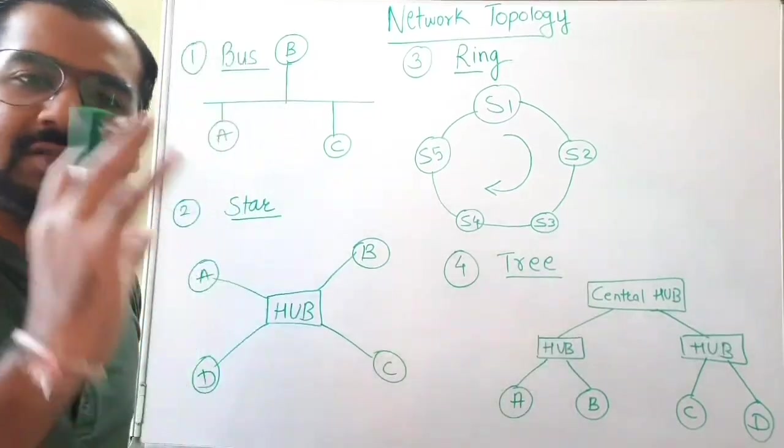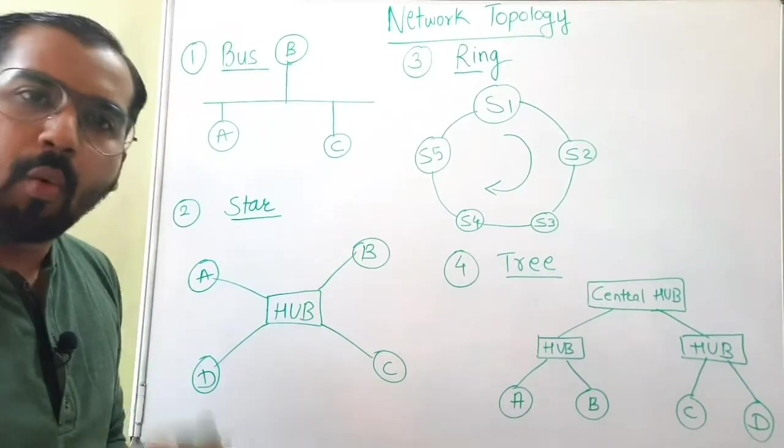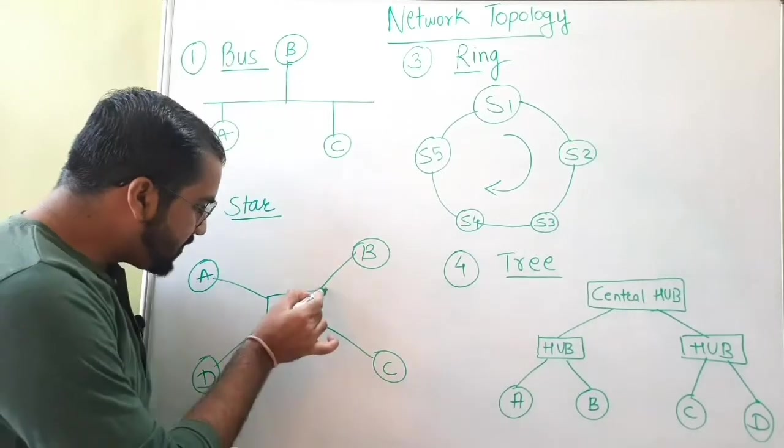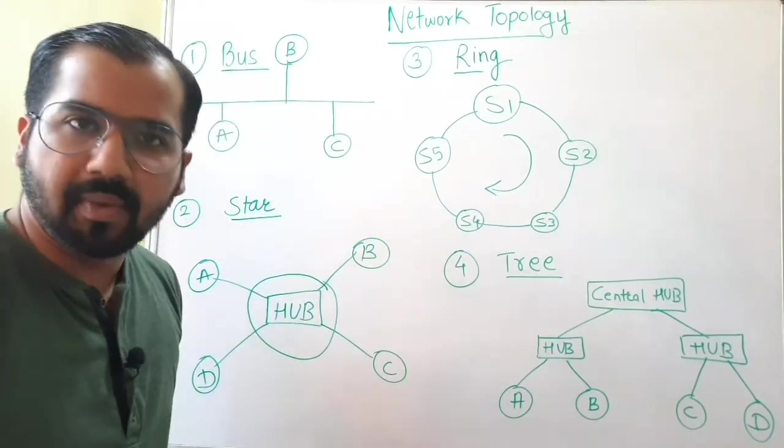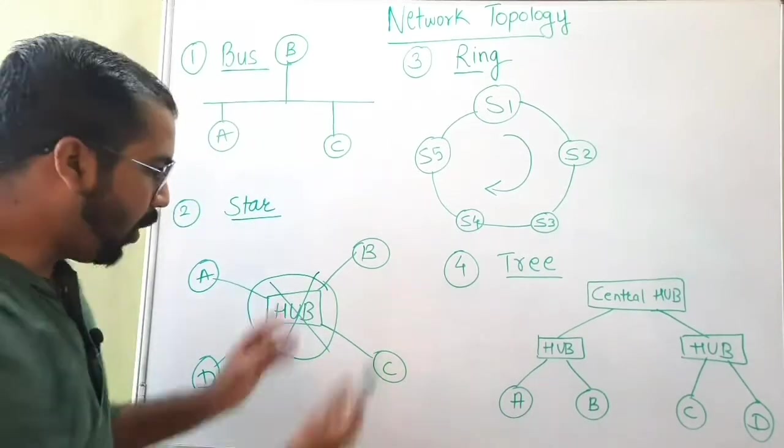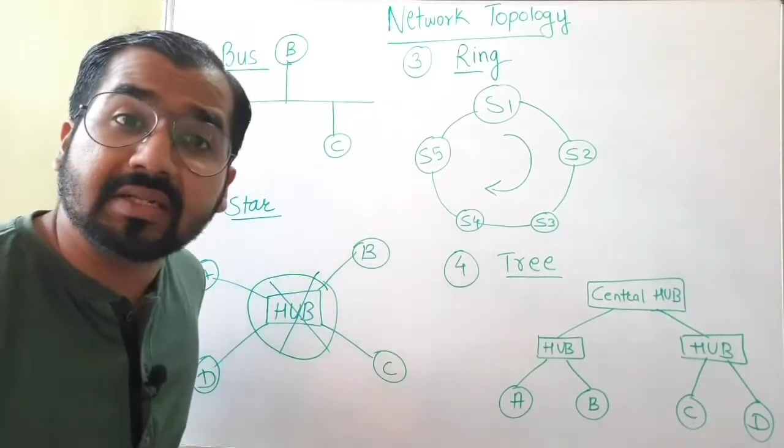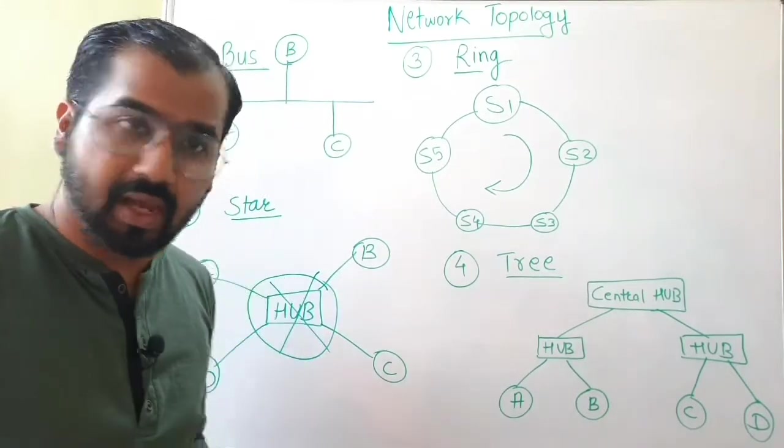But in star topology, there is one big problem. As you can also see and observe from this diagram, what will happen if this particular central node which we are calling as a hub, if it gets down, it all will get disconnected and thereby resulting in the network getting down or crashed.